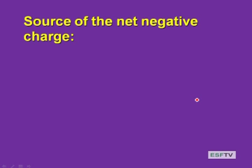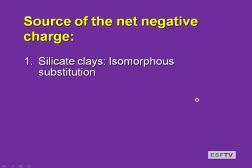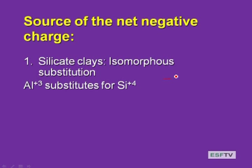Now we get to the source of the net negative charge. We discussed isomorphous substitution. In silicate clays, when aluminum plus three substitutes for silica plus four in the tetrahedral layer, the net result is a minus one charge. The more substitution of Al3+ for Si4+ in the silicate layer, the greater the number of charges, the greater the net negative charge, and the greater the cation exchange capacity.